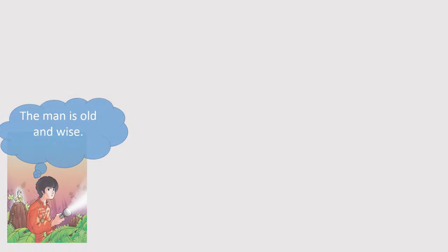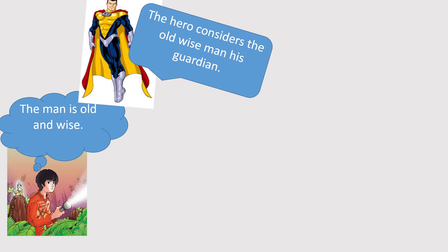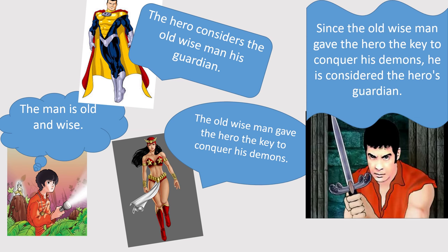And so they wrote more sentences. Aya said, 'The man is old and wise.' Abby said, 'The hero considers the old wise man his guardian.' Jed shared, 'The old wise man gave the hero the key to conquer his demons.' Again, Isagani was able to combine all ideas: 'Since the old wise man gave the hero the key to conquer his demons, he is considered the hero's guardian.' The squad felt happy because all their ideas got represented. They realized they wanted to be like Isagani — capable of varying sentence style, evoking varied effects and shades of meaning, so their sentences will not only be grammatical but also rhetorical.